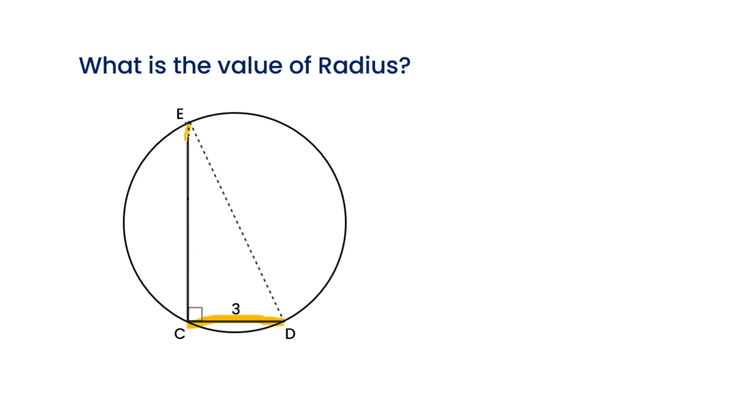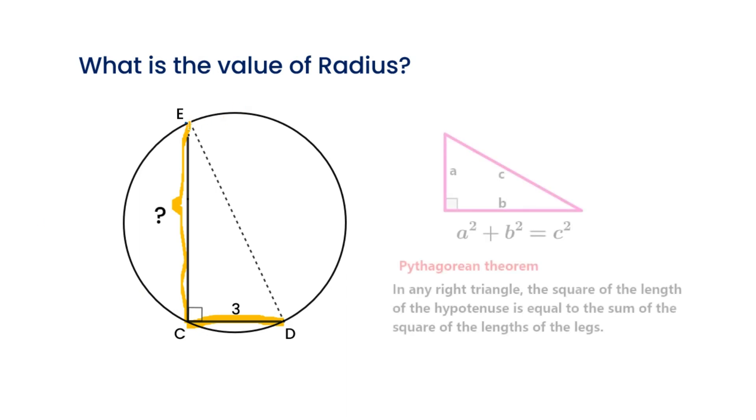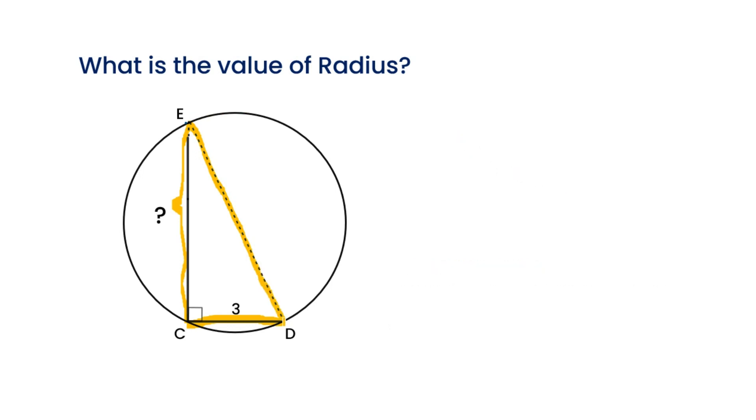So if we get the value of EC, we can get the diameter of the circle by the Pythagorean theorem. Then we can get the radius of the circle because DE equals 2 times the radius. Let's go back to the problem.